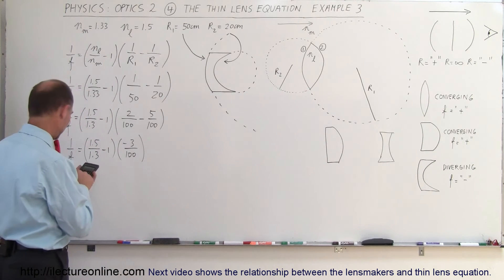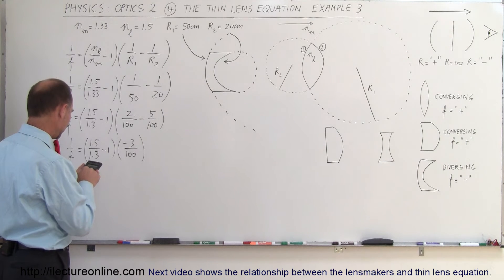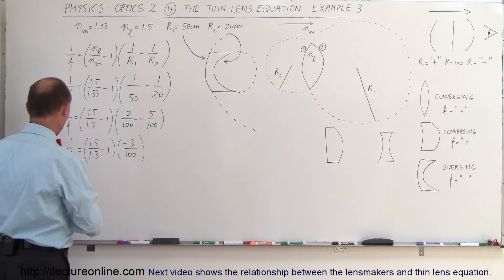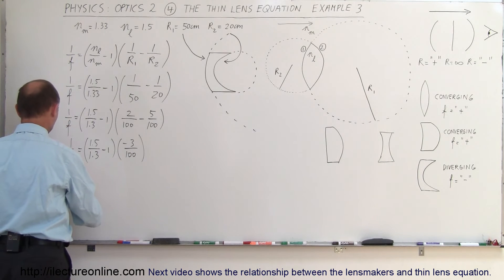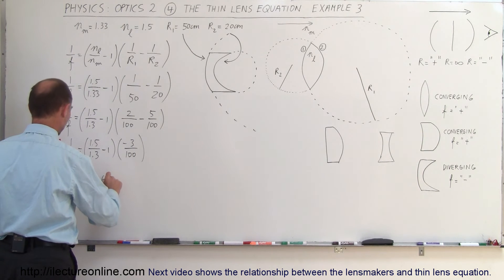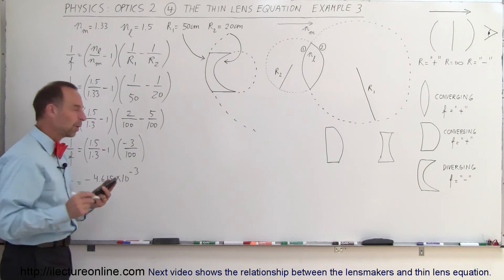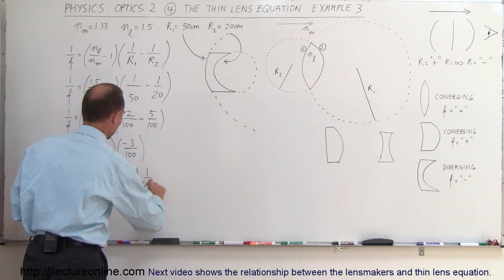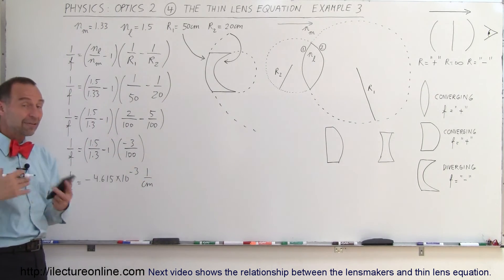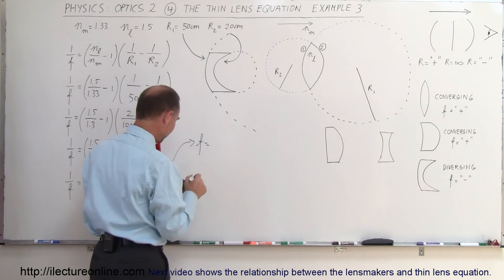Let's see what we get here. 1.5 divided by 1.3 minus 1 times 3 divided by 100 equals, so we have 1 over the focal length of the lens is equal to minus 4.615 times 10 to the minus 3 and of course that would be 1 over centimeters if you want the units in there and then of course we take the inverse of that to get the focal length. So the focal length is equal to the inverse of that number.